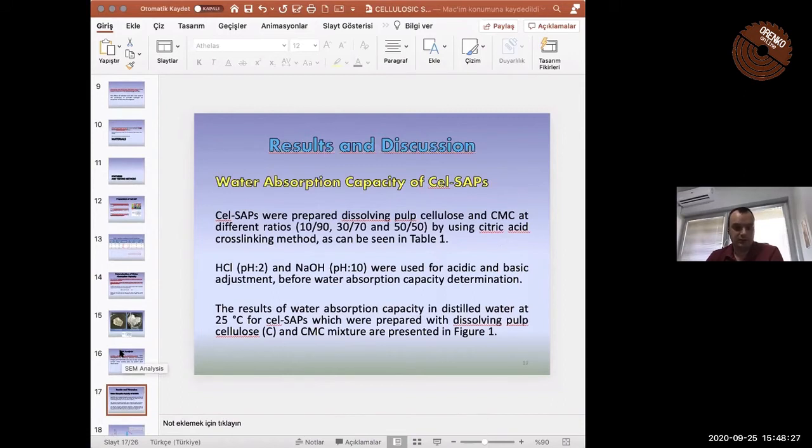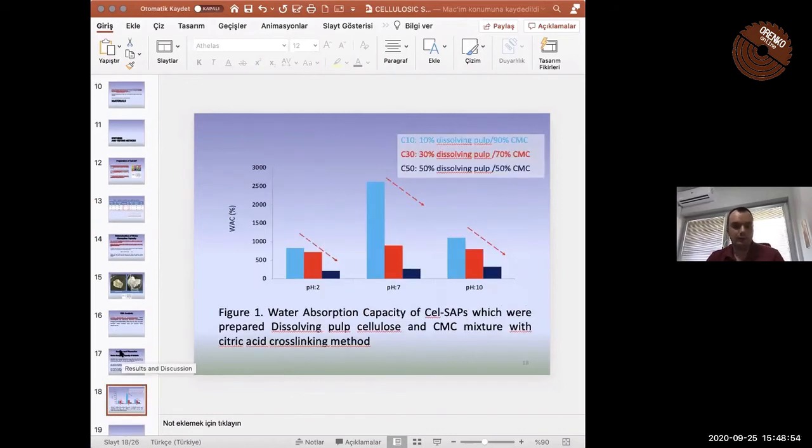As I mentioned before, we will see water absorption capacity of the SAPs in different pH conditions. We prepared three types of SAP from dissolving pulp and carboxymethyl cellulose at different ratios: cellulose 10/90, 30/70, and 50/50. We called them as C10, C30, and C50. You can see from figure one.